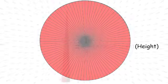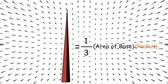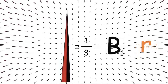So our equation becomes 1 over 3 area of the base times radius. And we will simplify this equation by replacing radius with r and area of the base with b.